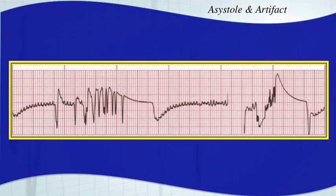Here this is obviously a loose electrode. It's completely distorted the rhythm — you cannot identify the arrhythmia with this loose electrode, so you're going to have to fix that.